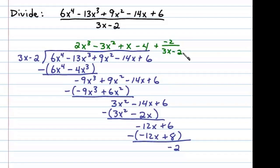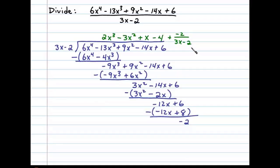And so this is our answer. All that is left to do is present it with the remainder term here. Instead of plus a negative term we'll say minus. And so our answer is 2x cubed minus 3x squared plus x minus 4 minus 2 over 3x minus 2.